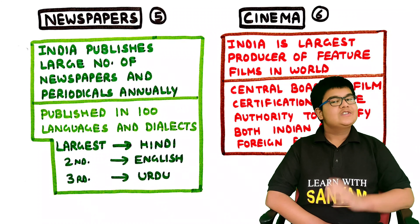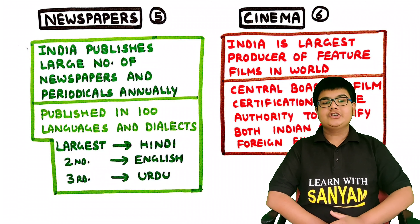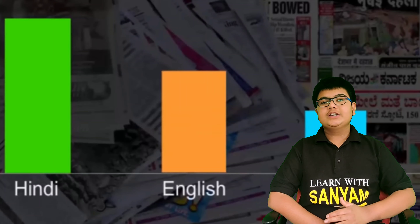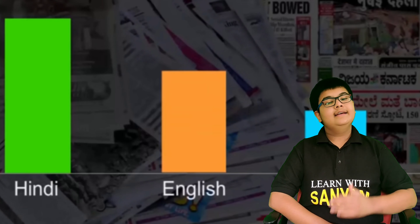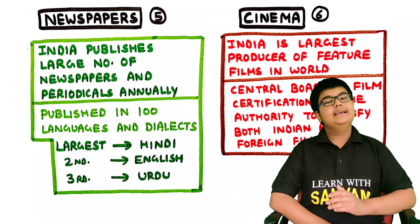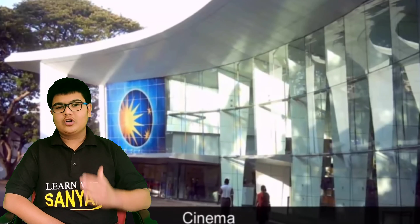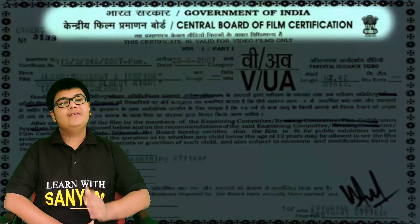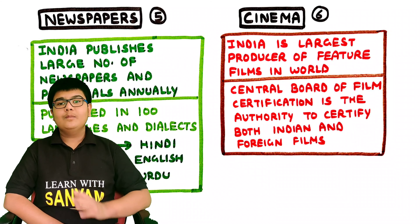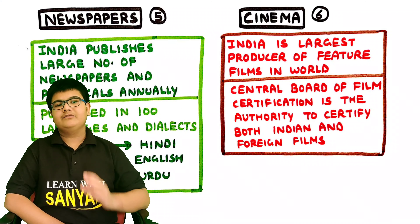Fifth, Newspapers. India publishes a large number of newspapers and periodicals annually. Newspapers are published in a hundred languages and dialects. The largest number of newspapers are published in Hindi, followed by English, and then Urdu. The last means of communication is cinema. India is the largest producer of feature films in the world. It also produces short films. The Central Board of Film Certification is the authority to certify both Indian and foreign films — a certificate appears at the beginning of every movie.